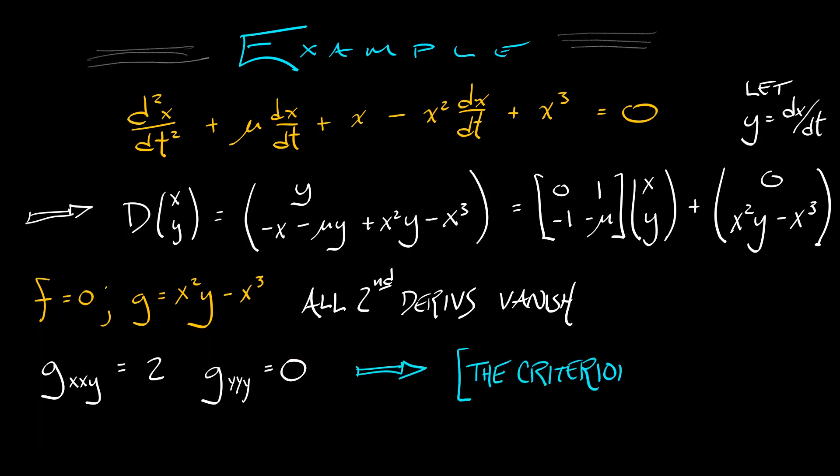That means that our criterion gives us a number of two. Two is positive. That's it. Subcritical Hopf bifurcation happening at the origin. That was not so bad.